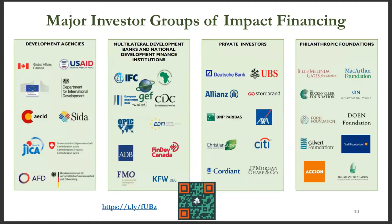The impact investing landscape has a diversity of major players active at global, continental, and regional levels. These include development agencies such as USAID and SIDA, multilateral development banks like the IFC and the African Development Bank, private investors such as JPMorgan Chase and Citibank, and philanthropic organizations such as the Bill and Melinda Gates Foundation and the Rockefeller Foundation. A catalog of major impact investors can be found using the web link and QR code at the bottom of the screen.